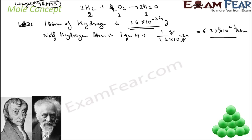So 1 gram of hydrogen will have 6.2 × 10²³ atoms. These many atoms piled up will form only 1 gram of hydrogen. Simple maths.